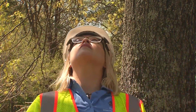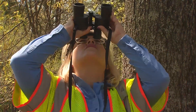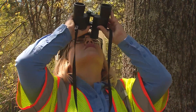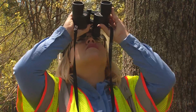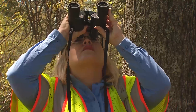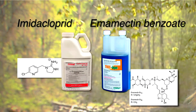There are a couple of options available to treat emerald ash borer. One available for residents is called imidacloprid, available at any home and garden store. The pesticide we really recommend is called emamectin benzoate, or the trade name Triage, which is much more effective at treating the emerald ash borer.